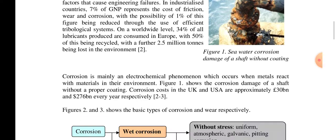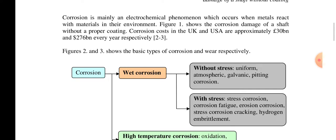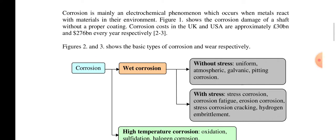Corrosion is mainly an electrochemical phenomenon which occurs when metals react with materials in their environment. The figure shows corrosion damage of shafts without proper coating. Corrosion costs in the UK and USA are approximately 30 billion and 276 billion dollars respectively.